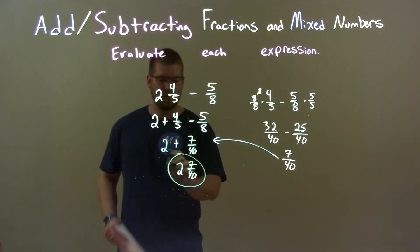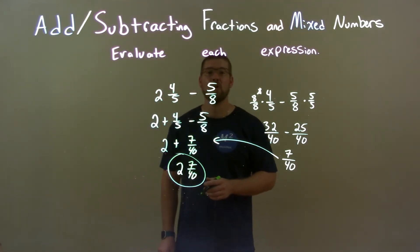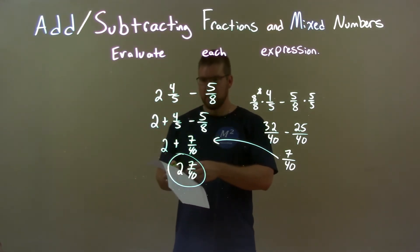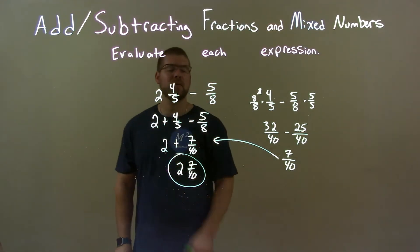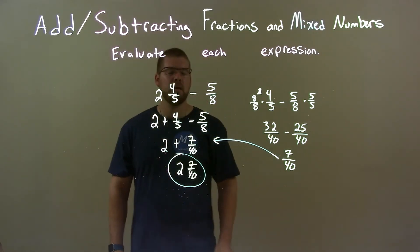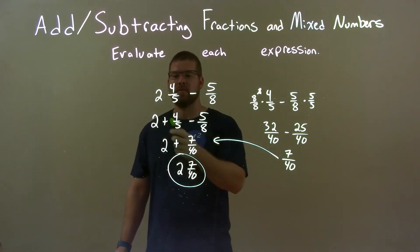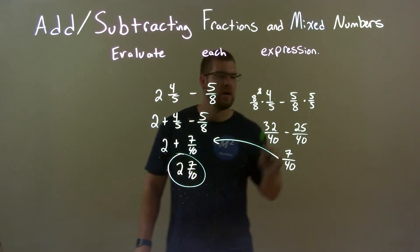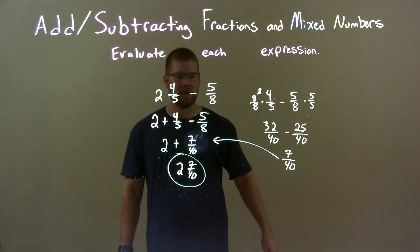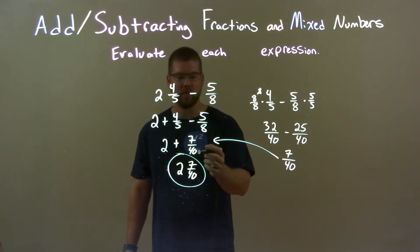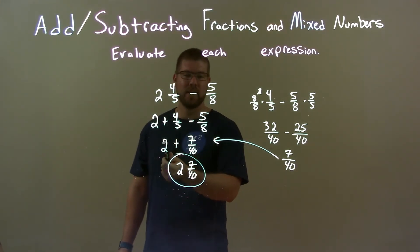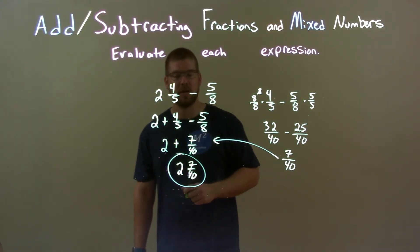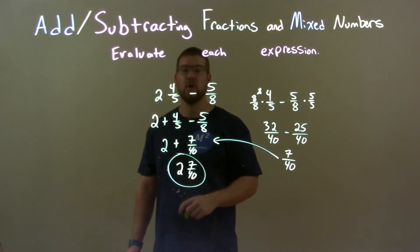And that's our final answer, 2 and 7/40. So quick recap: we're given 2 and 4/5 minus 5/8. I broke 2 and 4/5 to be 2 plus 4/5, then I added 4/5 and negative 5/8 together by finding a common denominator. That came out to be 7/40. At that point, I just combined it with the whole number to be one full mixed fraction, which is our final answer, 2 and 7/40.